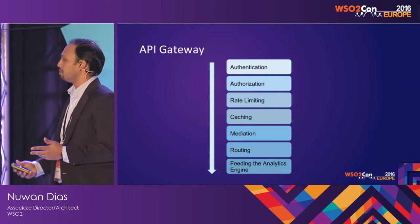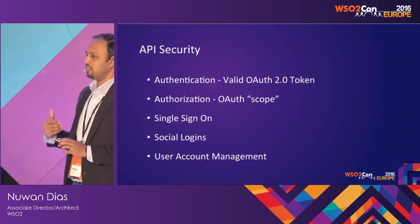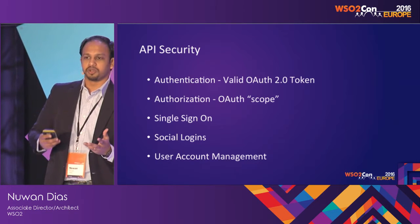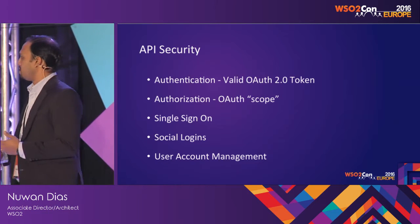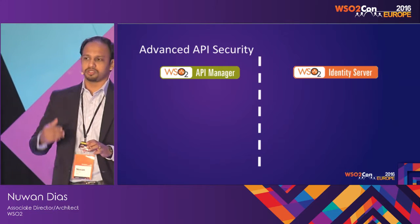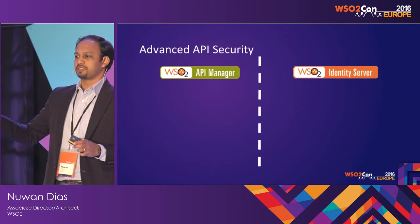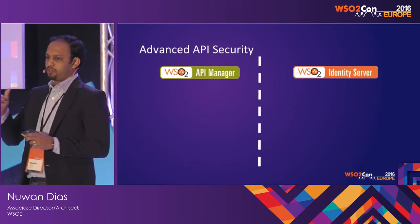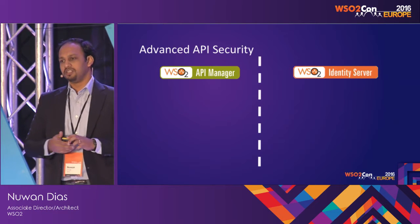The first gateway capability is security. When looking at security, key attributes include authentication, authorization, single sign-on, social logins, and user account management. In the context of OAuth, authentication simply means whether you have a valid access token. All requests coming into the gateway should bear a valid access token, and the gateway communicates with a key management server and OAuth server to check for validity.